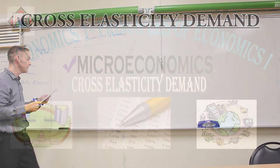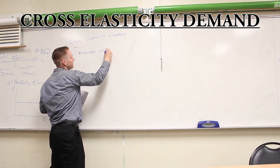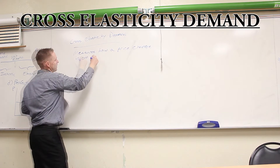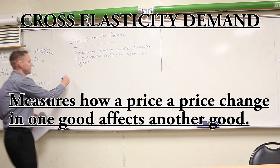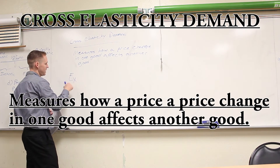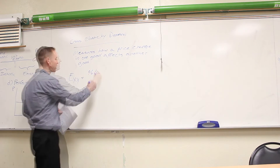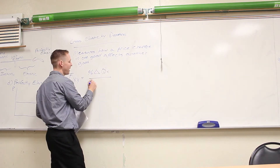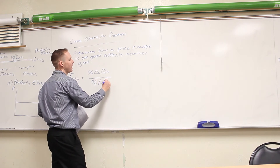The cross-price elasticity of demand measures how a price change in one good affects another good. The cross-price elasticity is measured by the percentage change in the quantity of good X divided by the percentage change in the price of Y.